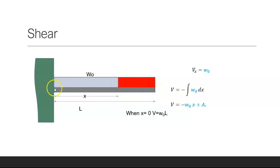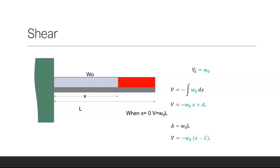That gives us w naught x plus a constant of integration. I know when x is equal to zero that the area under the curve is w naught L, so A equals w naught L. The shear force can then be written as minus w naught times (x minus L).